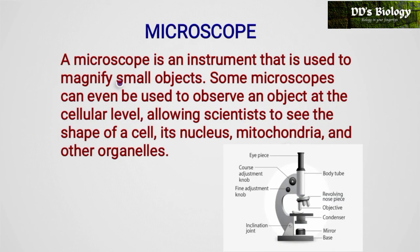First, what is a microscope? The microscope is an instrument that is used to magnify small objects. Small objects include bacteria, viruses, fungal spores, mycelium, and algae. We can see their definite structure by magnifying them.